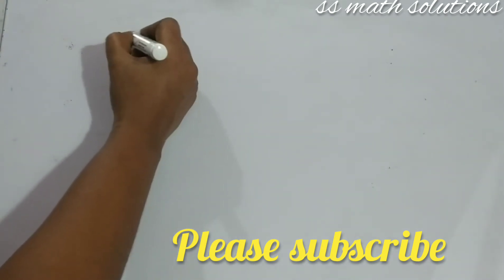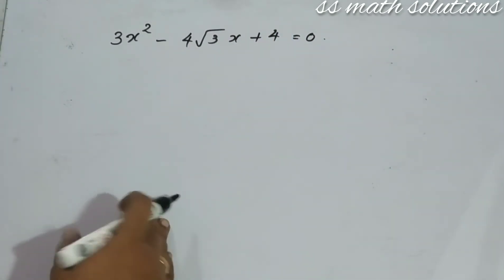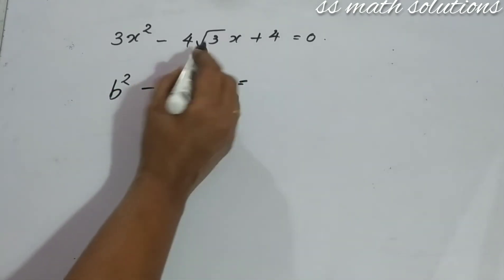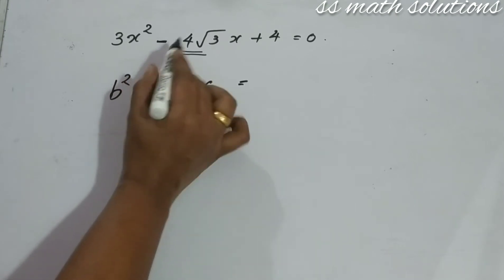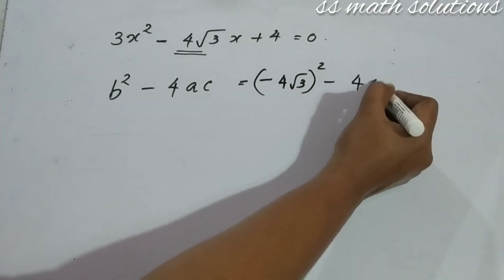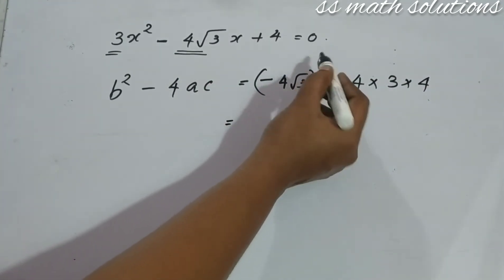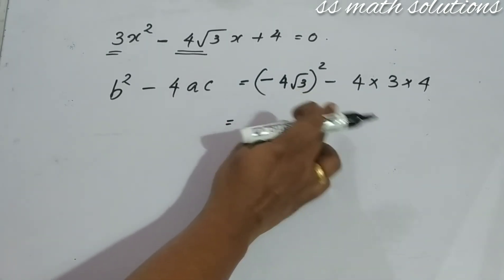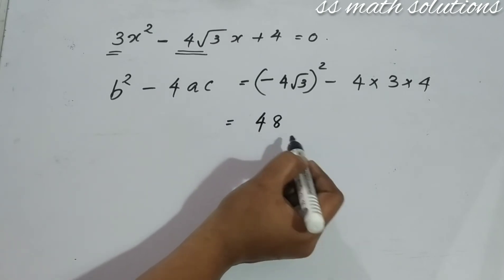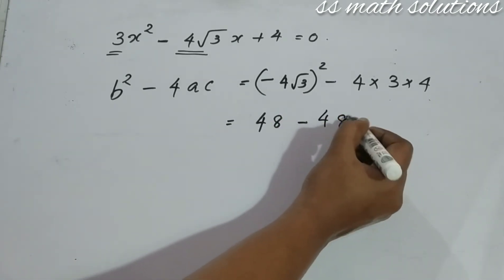Let's try another equation: 3X squared minus 4 root 3 times X plus 4 equals zero. We need to find the nature of roots, so we calculate the discriminant B squared minus 4AC. Here B is minus 4 root 3, so B squared is minus 4 root 3 all squared, minus 4 times A which is 3 times C which is 4. That gives 4 squared times root 3 squared, which is 16 times 3, equals 48. Minus 4 times 3 times 4 equals 48. So 48 minus 48 equals zero.